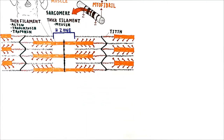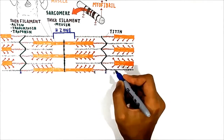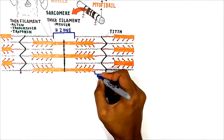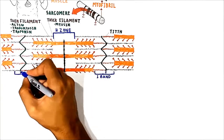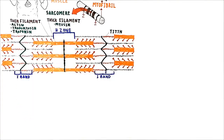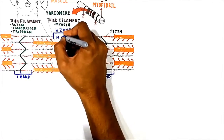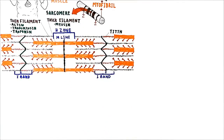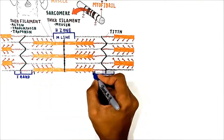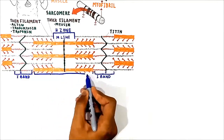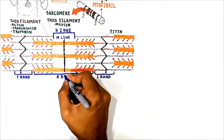Looking at zones and bands: the H zone is composed only of myosin, and here there is no overlap between actin and myosin. The I band contains only the actin thin filaments, which extend from the Z line toward the center of the sarcomere. The M line is at the center of the sarcomere and is the site at which the thick filaments are linked to each other.